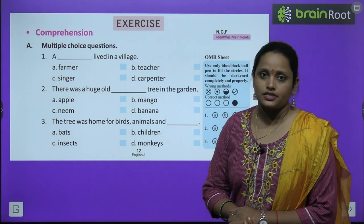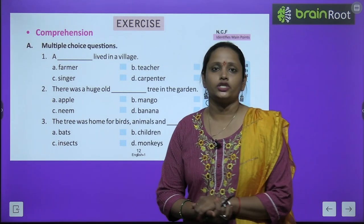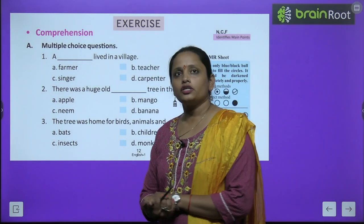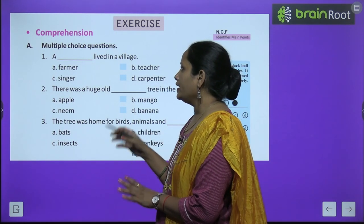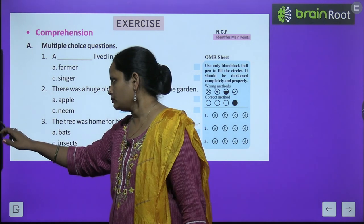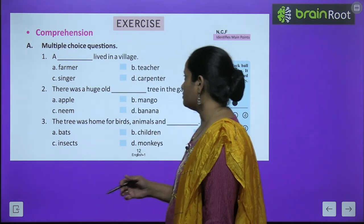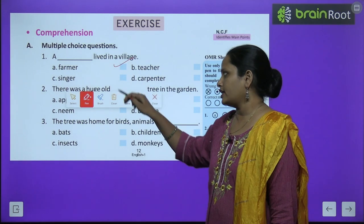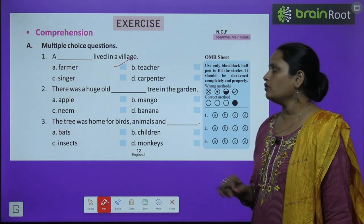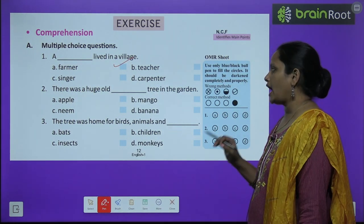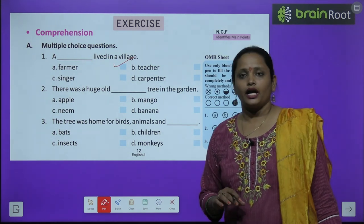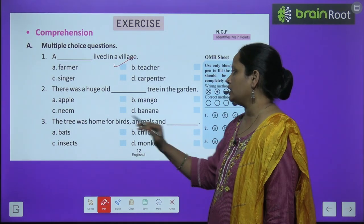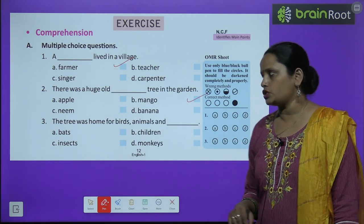Now let's move on to exercise section — comprehension, A exercises, multiple choice questions. The first question is: a dash lived in a village. कौन रहता था एक village में? Farmer, teacher, singer, या carpenter. So yes, the correct answer is farmer. There was a huge old dash tree in the garden — बड़ा सा, पुराना सा कौन सा tree था garden में? Apple, mango, neem, या banana. So it was mango tree.